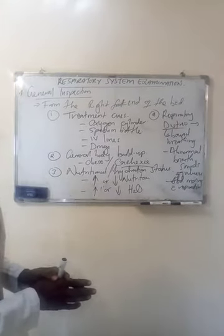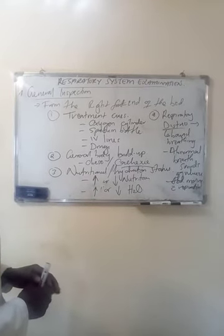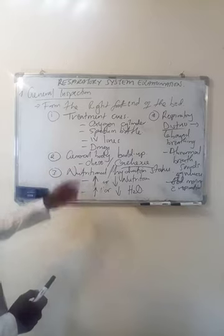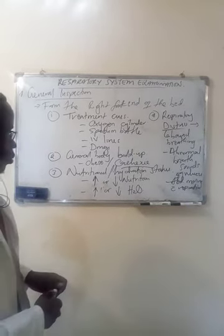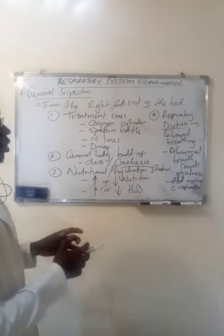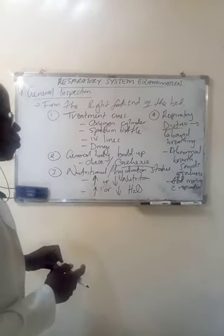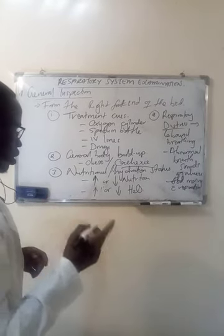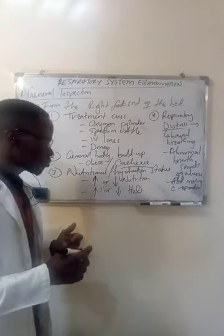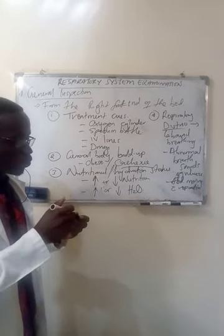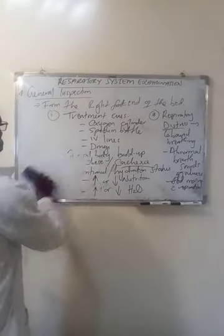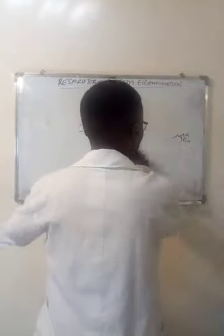Let's have a continuation of where we ended. Looking at respiratory system examination, we've looked at general inspection — treatment cues, general body build, nutrition or hydration status, respiration, and the general health status of the patient: does the patient look ill or not? Knowing whether the patient looks very ill will help you decide how exactly to handle them.